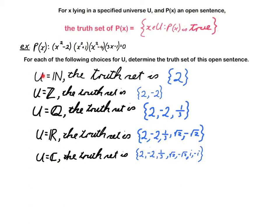So if we take our universal set to be the set of natural numbers, then the only root that I mentioned that lies in the natural numbers is 2. That came from this factor here. And so the truth set is just singleton set {2}.